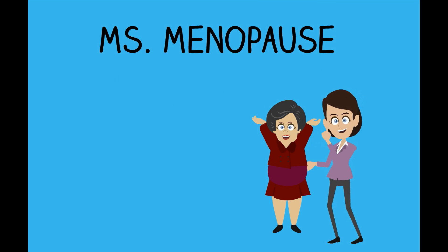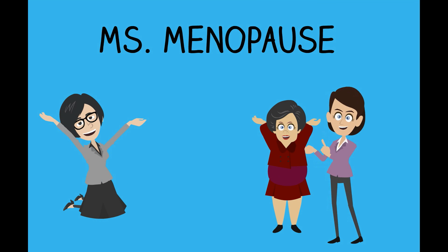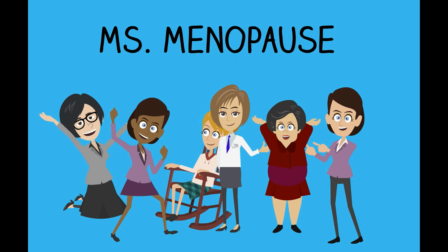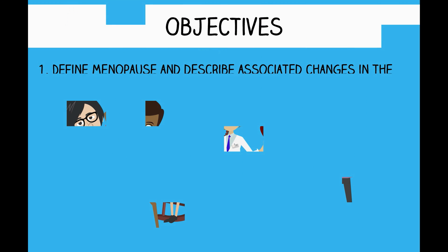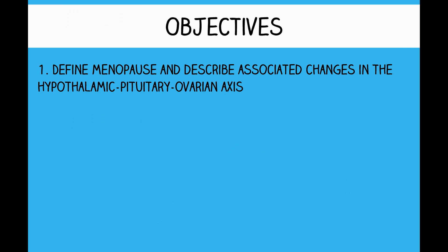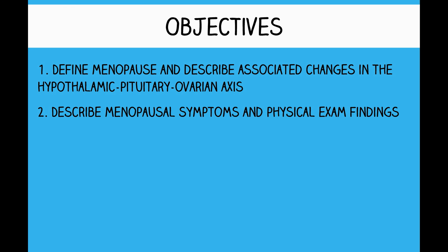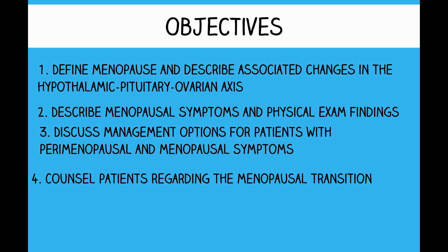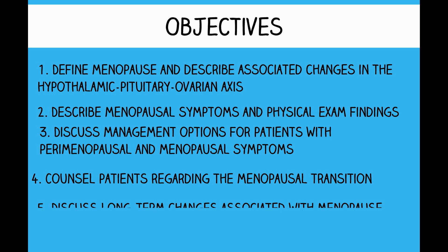The menopausal transition is a natural transition for most women, and it is important to remember that women may spend most of their lives in the postmenopausal years. The objectives of this video are to define menopause and describe associated changes in the hypothalamic-pituitary-ovarian axis, describe menopausal symptoms and physical exam findings, discuss management options for patients with perimenopausal and menopausal symptoms, counsel patients about the menopausal transition, and discuss long-term changes associated with menopause.